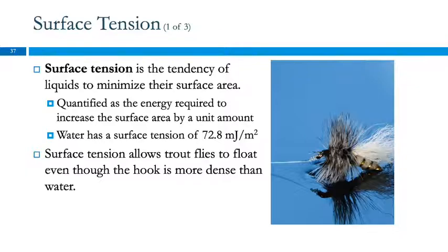And, of course, it can be measured. It's quantified as the energy needed to increase the surface area by a unit amount. So we could measure the surface tension of water as 72.8 millijoules per square meter. So it would take 72.8 millijoules of energy to increase the surface area of the water by a square meter.